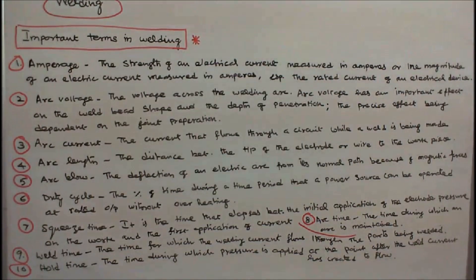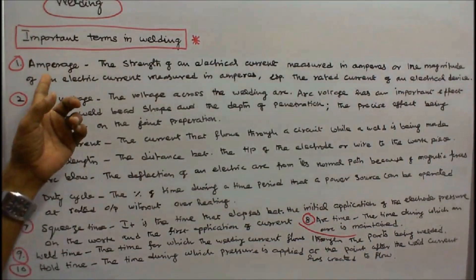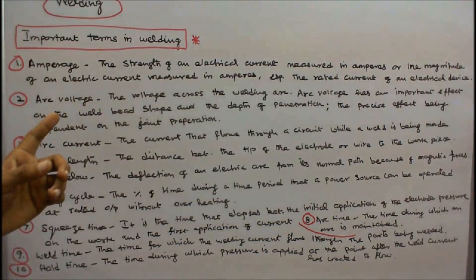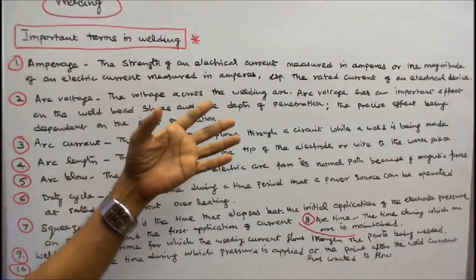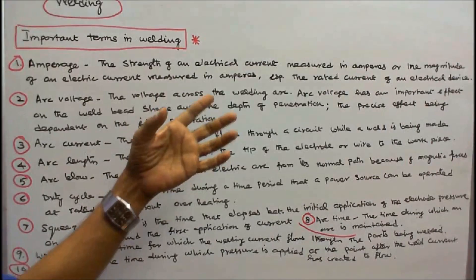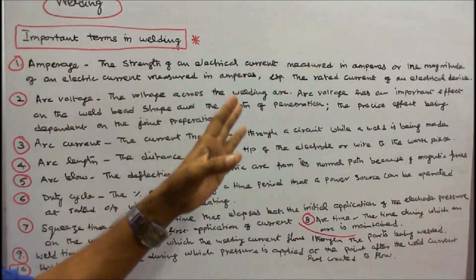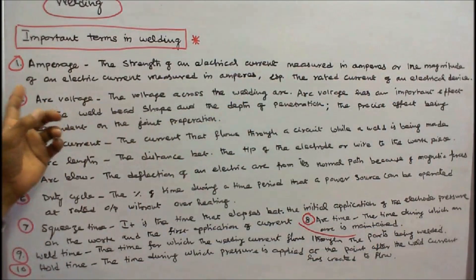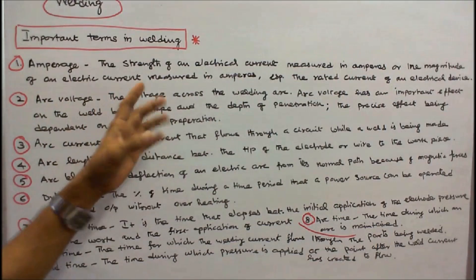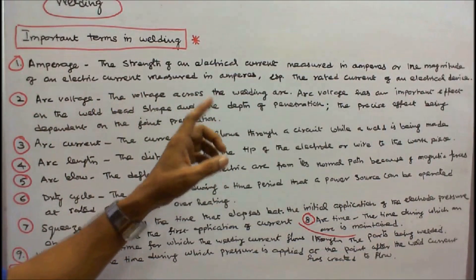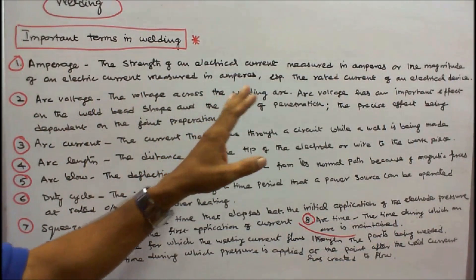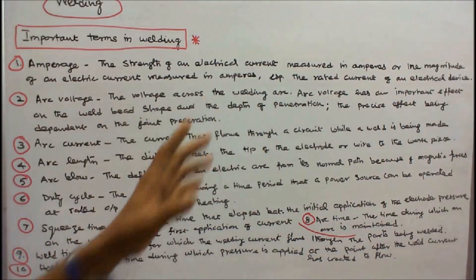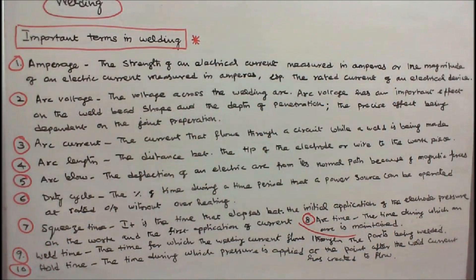Important terms in welding. Amperage: the strength of an electrical current measured in amperes, or the magnitude of an electric current measured in amperes, especially the rated current of an electrical device or component.